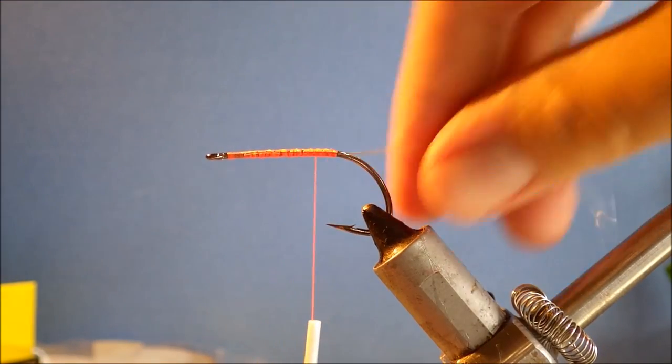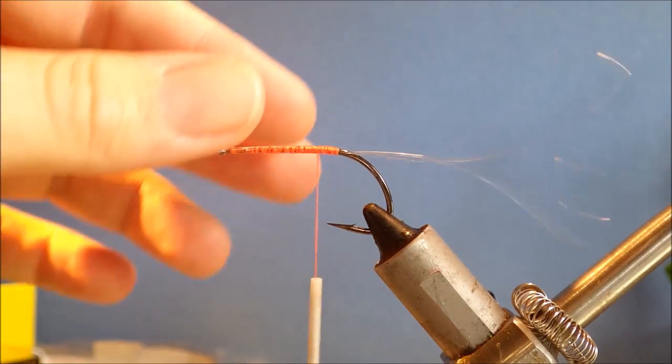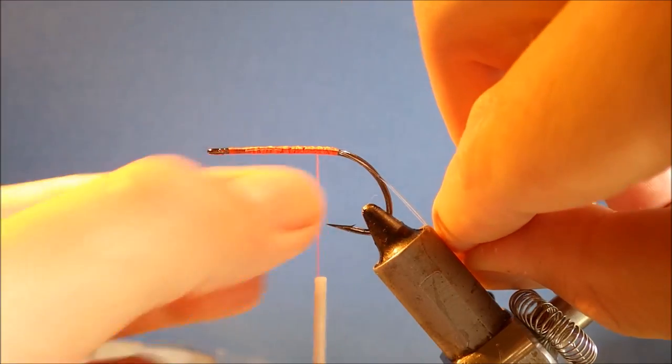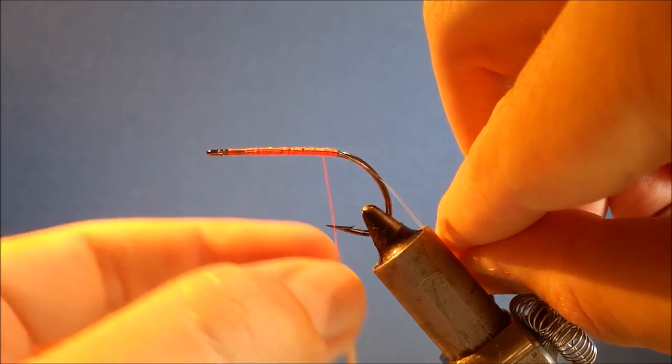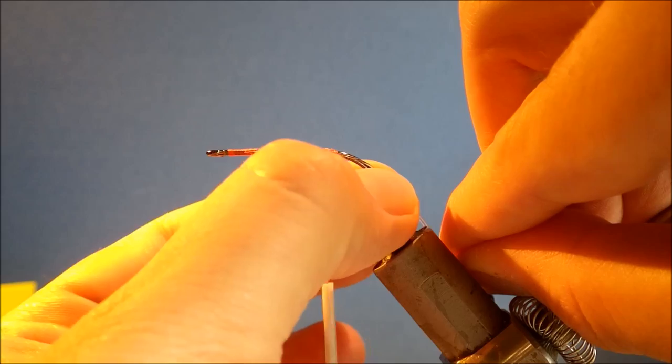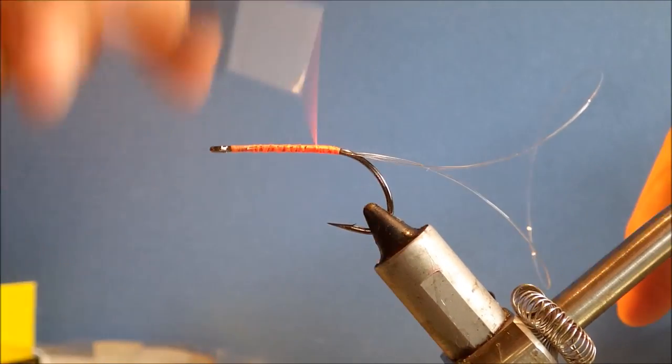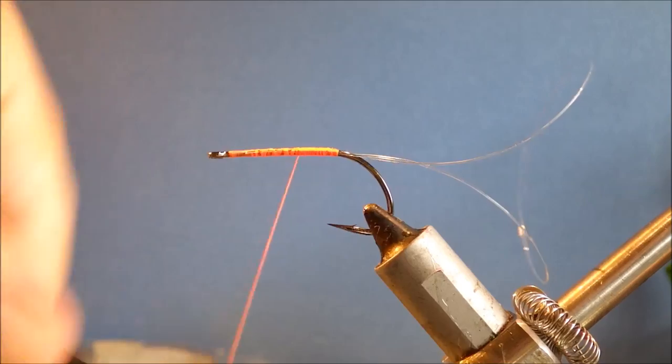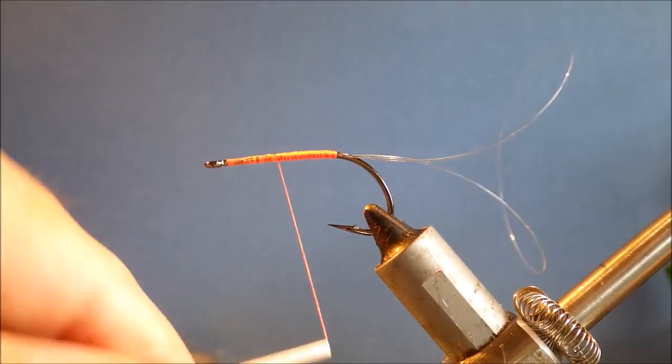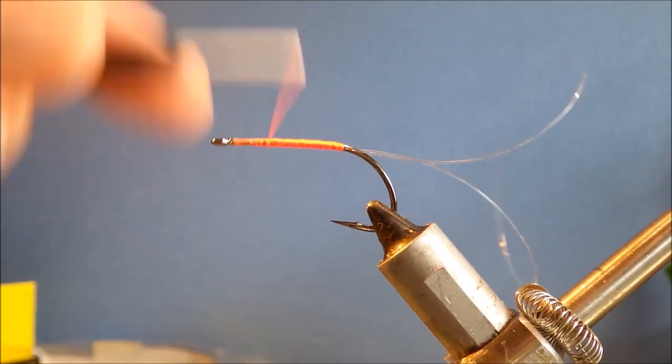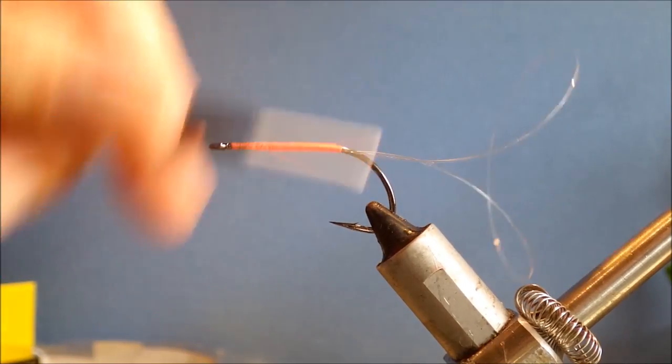I just stop there with my thread on this fly. Usually when you tie an island loop weed guard, you go down here, but you really don't need to do that with a double loop. Just build it up a bit more.